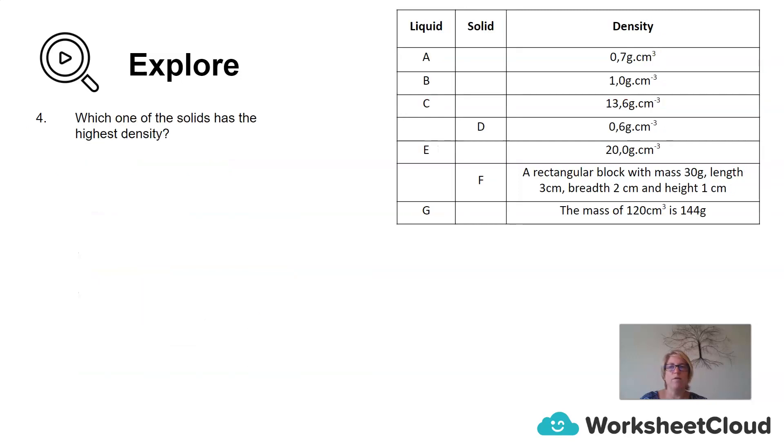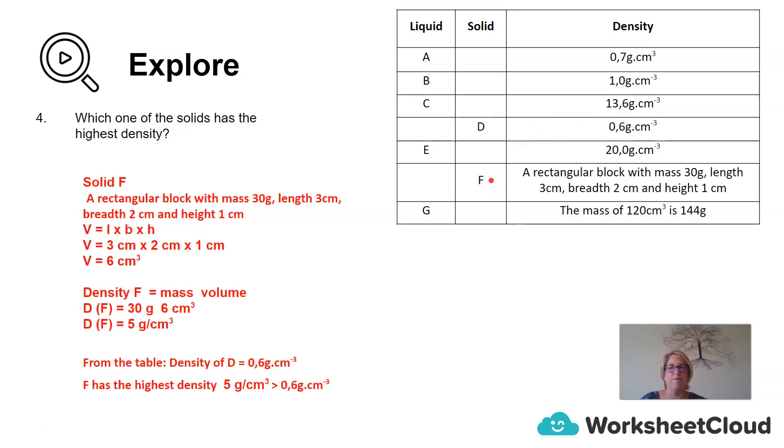Which one of the solids has the highest density? We have two solids, D and F. D, they've given us the density already for. That's 0.6 grams per centimeters cubed. I think we're going to have to calculate the density for F.